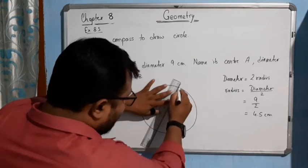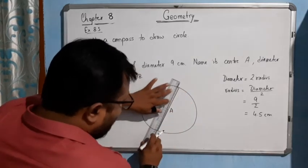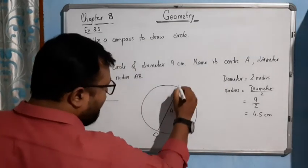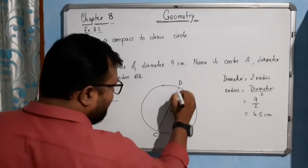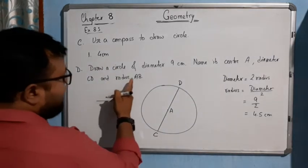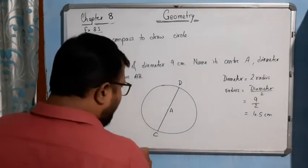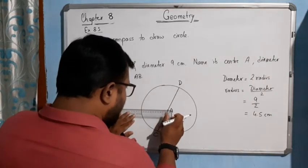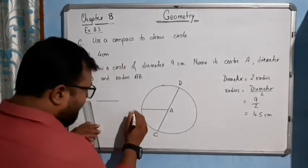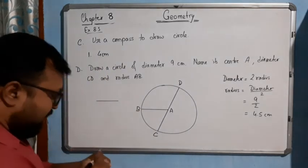Like this you will draw, what should be the name? It should be CD. So this is our diameter. And radius AB, this is the A and this is B here. So this is our radius AB.